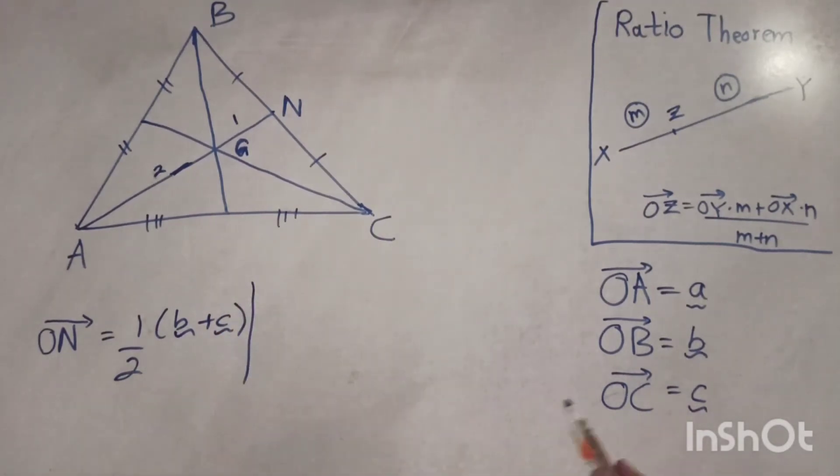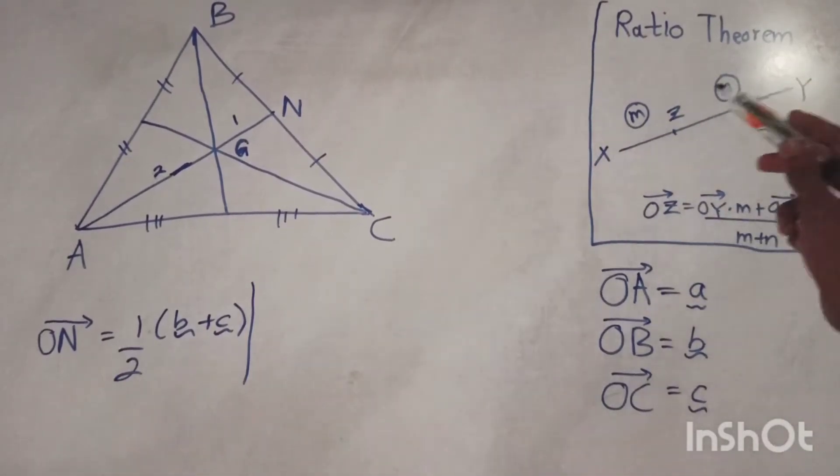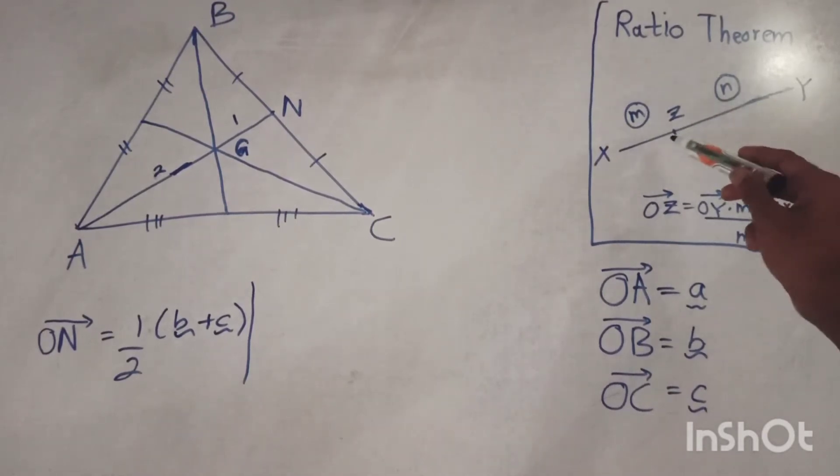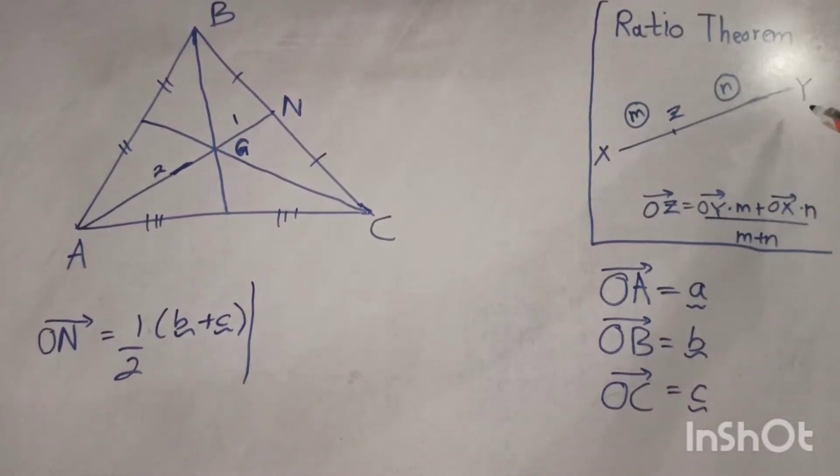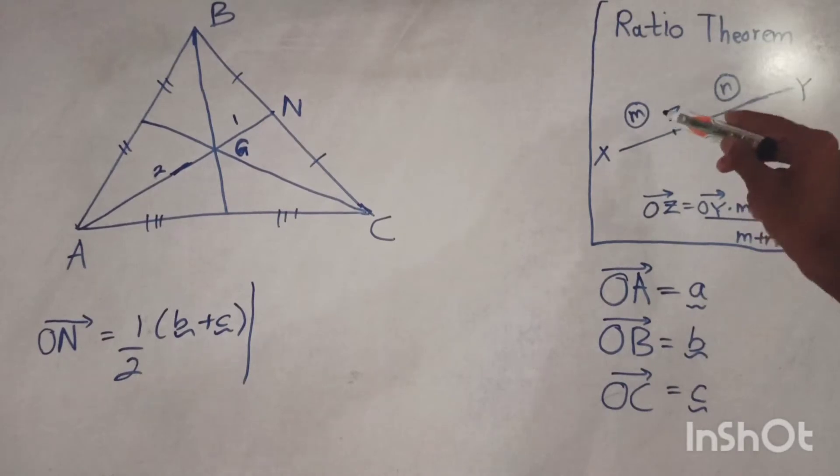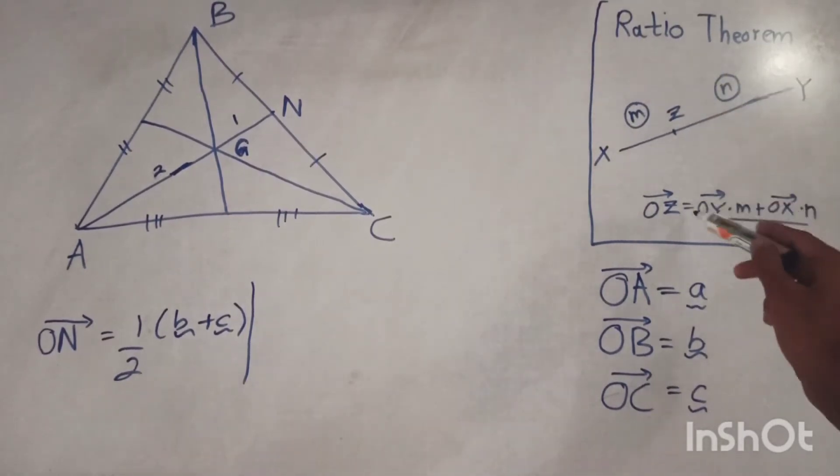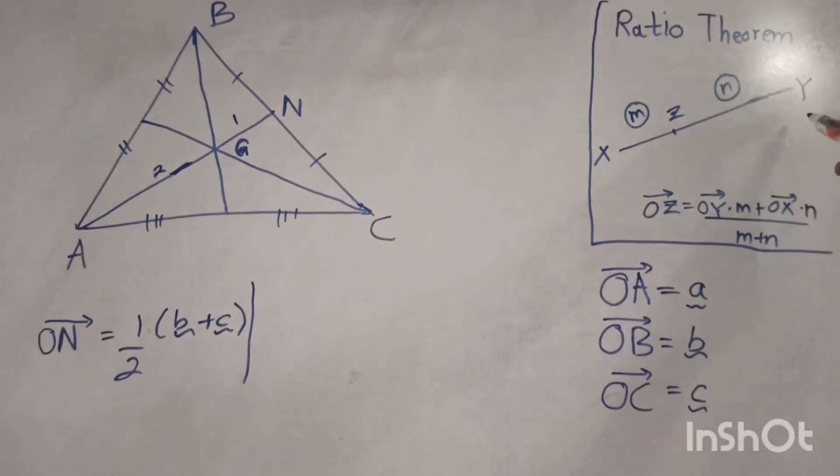Now let's look at this theorem. This theorem says how to find a point in a straight line using the ratios. These are the ratios and the position vectors OY, OX. We are going to apply this theorem to this line AN.